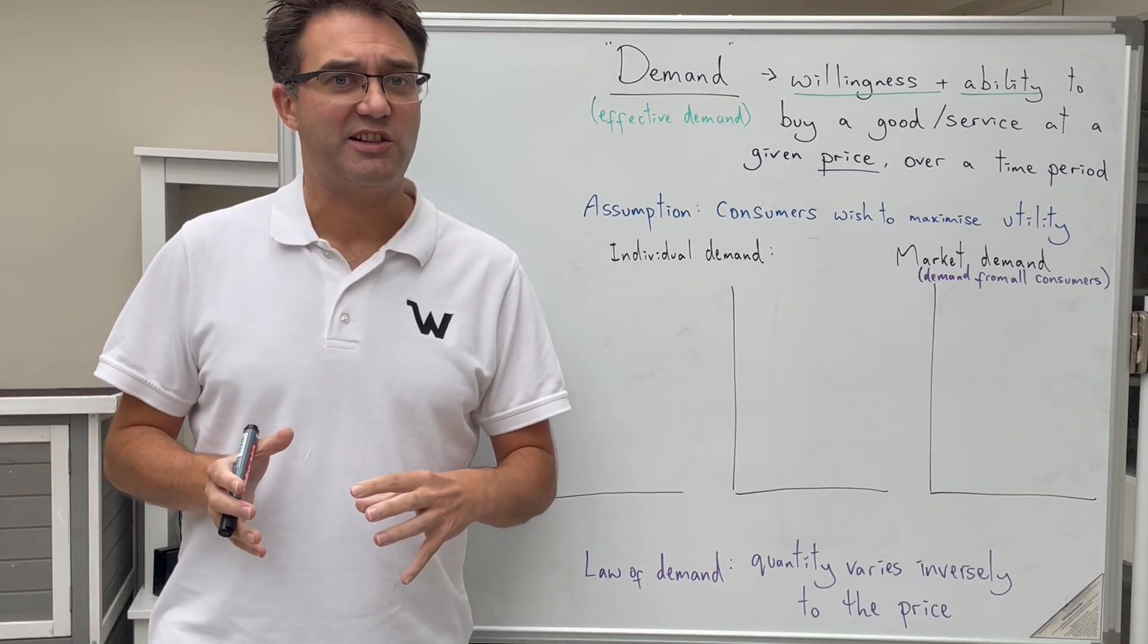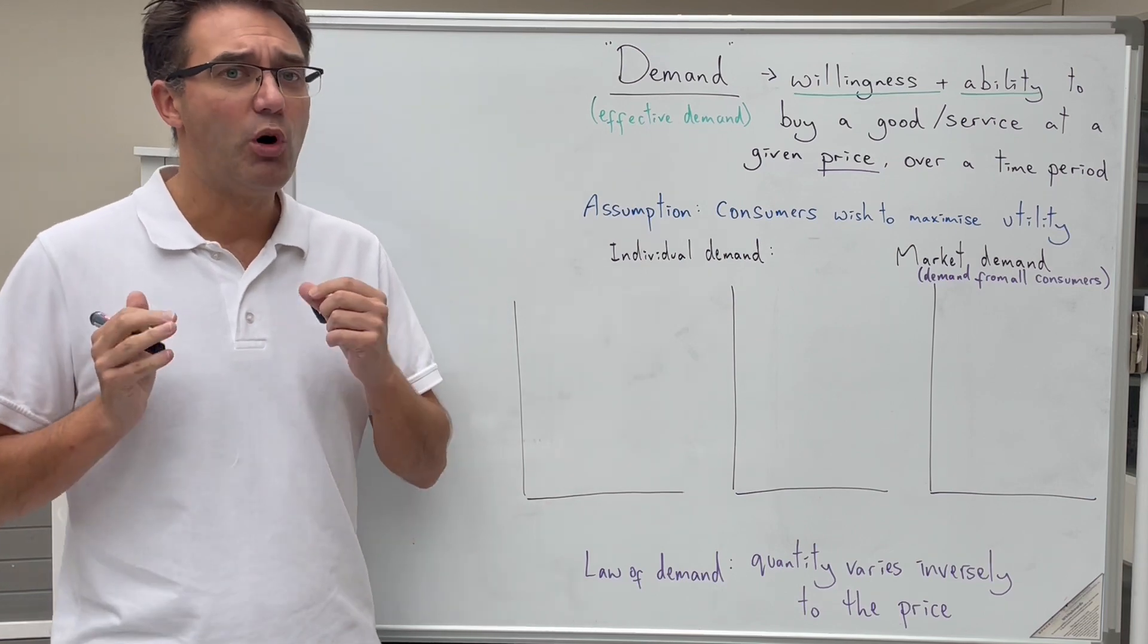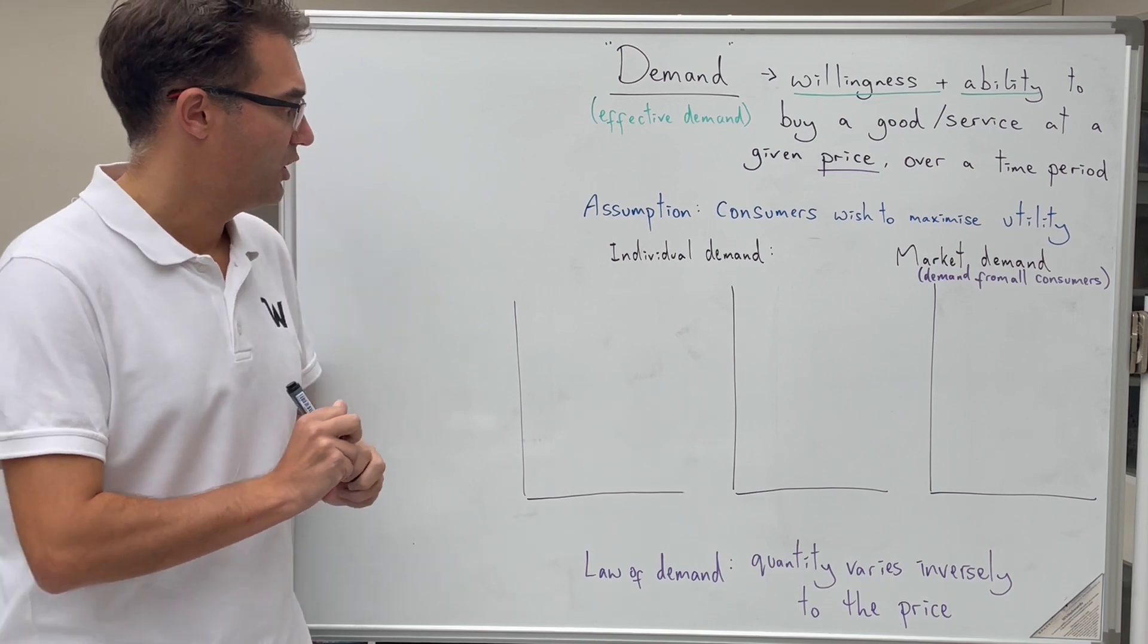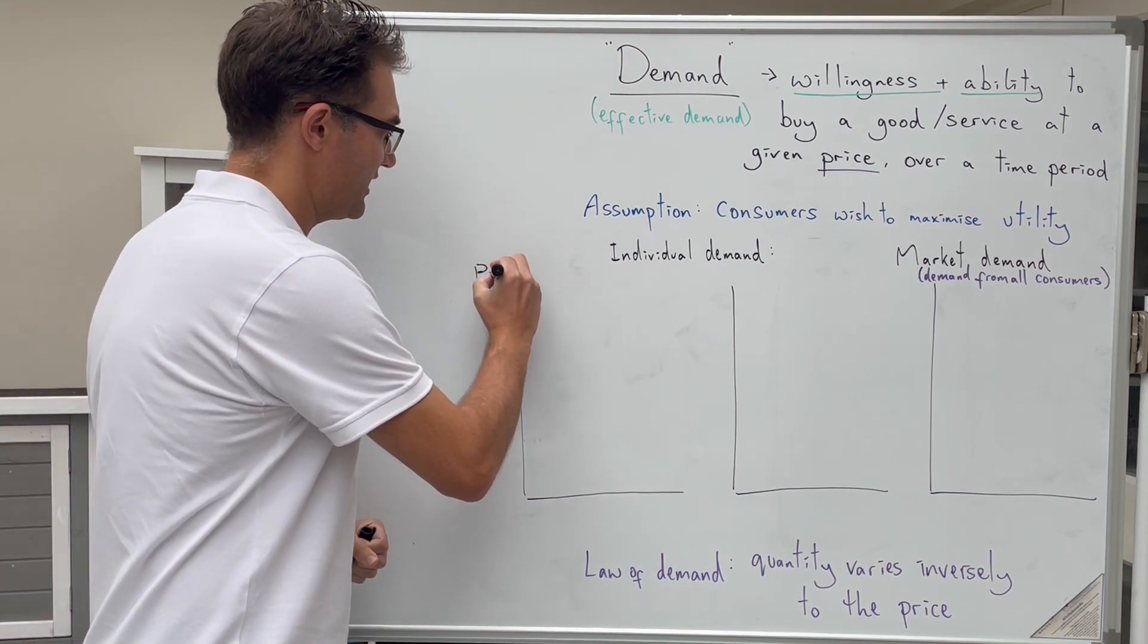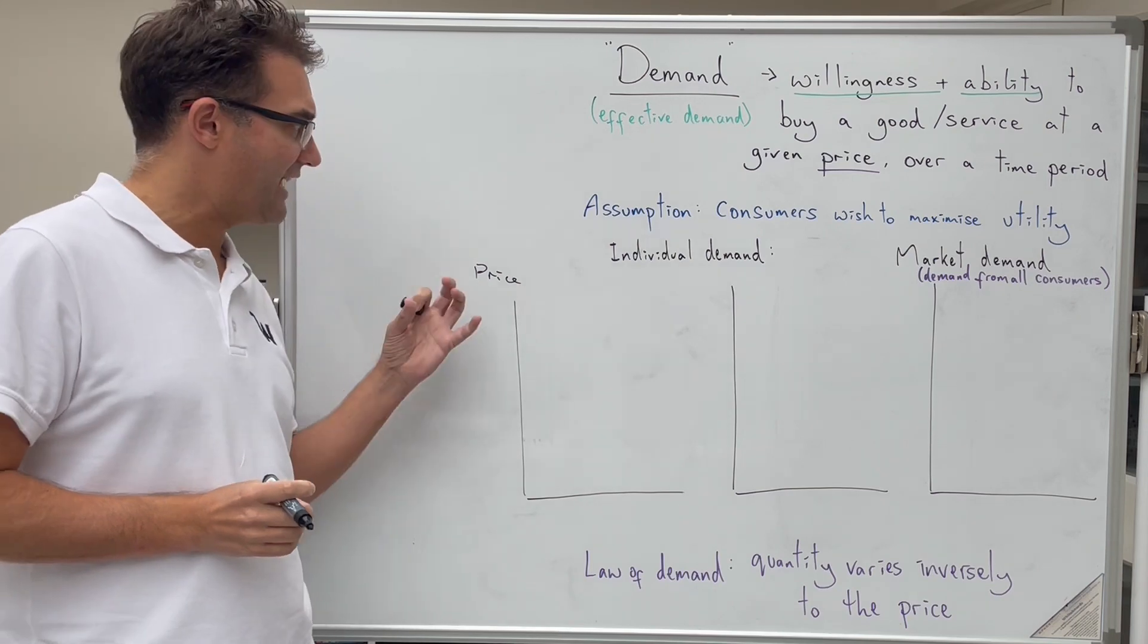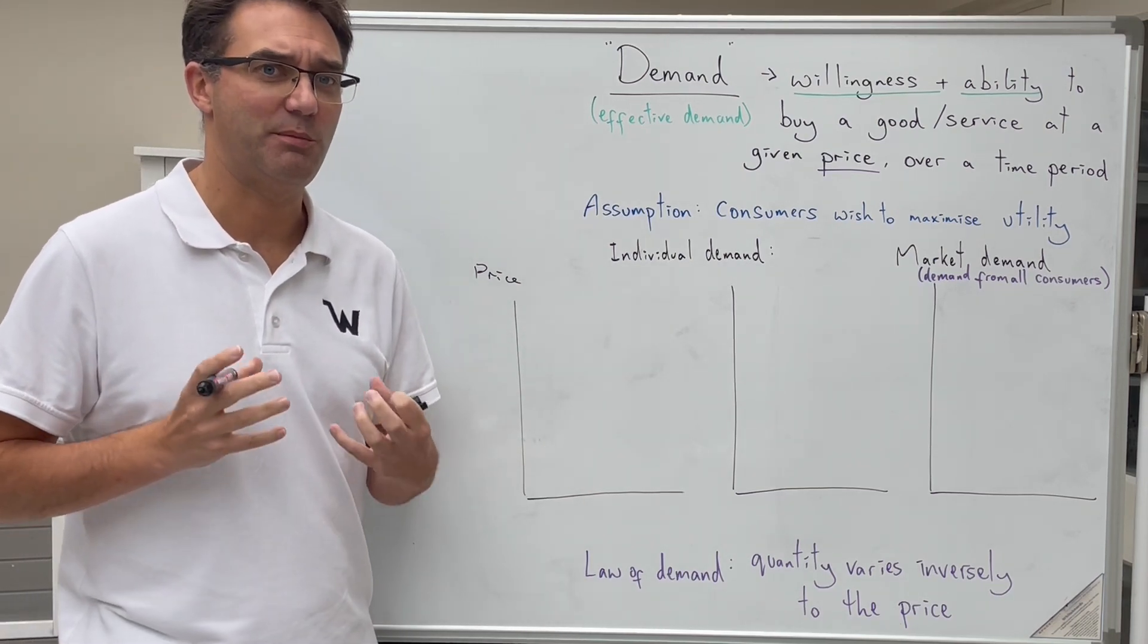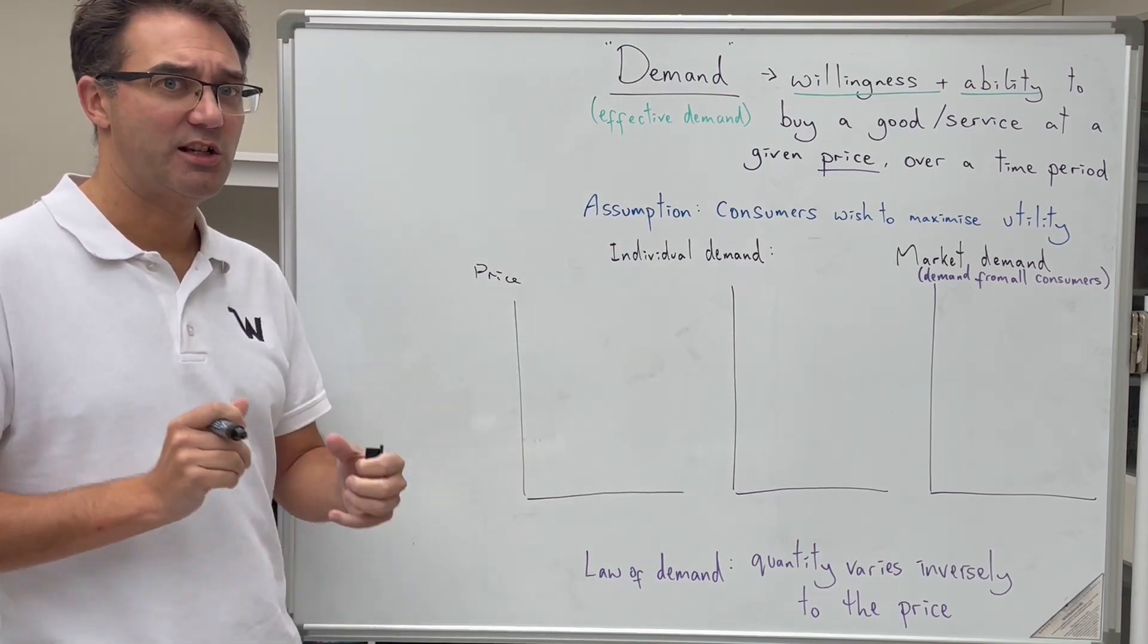We start with drawing our demand curves by labeling the diagram and what we're going to show here is the relationship between two things. We're looking at the relationship between price, that is what we have to pay for a good or service, and what we're comparing that to is at each price what is the quantity that we are going to be willing and able to buy. So we label our other axis quantity.